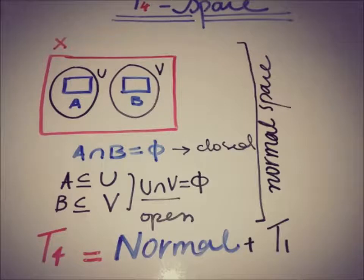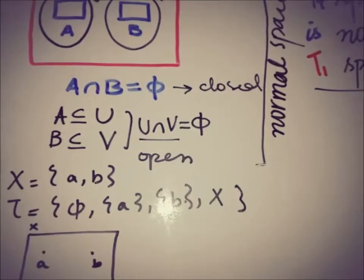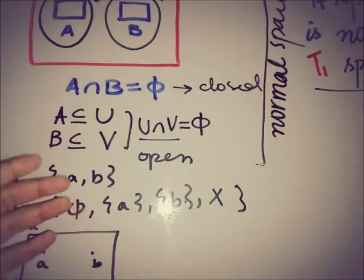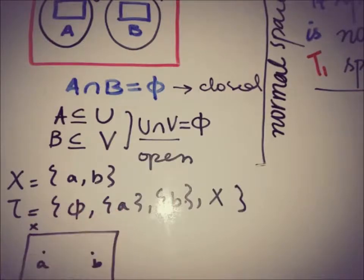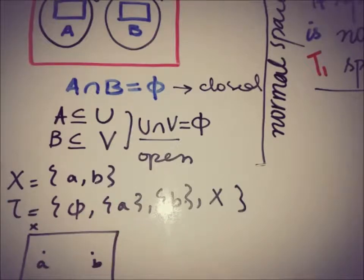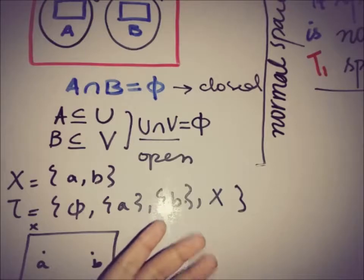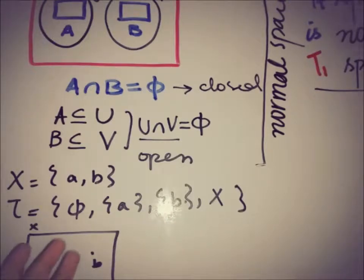The most common example of a normal space is a discrete space with at least two points. If X contains A and B, and the topology contains the empty set, the set A, the set B, and the set X, we check the closed sets. A closed set is one whose complement is open. The complement of A is B, and B is in the topology, so B is open, which implies A is closed. Similarly, B is closed because the complement of B is A, which is open. And X is also closed because the complement of X is the empty set, which is open.